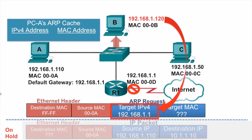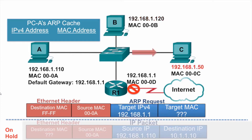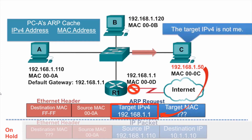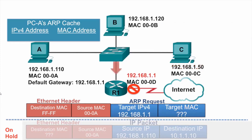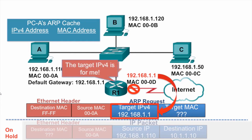PCB receives the ARP request, compares its own IPv4 address against the target IPv4 address in the ARP request, and notices it is not a match, so it is not the intended target. PCC receives the ARP request, compares its IPv4 address against the target IPv4 address, and it is indeed a match. It is the target of the ARP request.